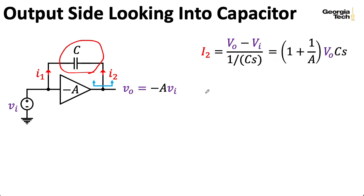So here, if I want to write everything in terms of VO, I can divide both sides of the expression here by A, and we can wind up with 1 plus 1 over A VO times CS. And we can wind up then saying that Z2, the impedance looking into the right side of the capacitor, is that voltage at the output here divided by I2.